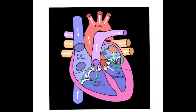The third type is the semilunar valves. There are two semilunar valves: the aortic valve and the pulmonary valve. So in total, three types of valves are present — tricuspid, bicuspid (mitral), and semilunar valves, with the semilunar comprising the aortic and pulmonary valves.